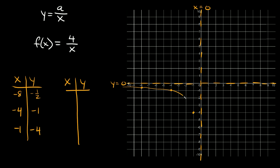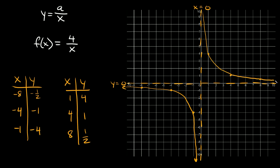So let's plot our three points: negative 8, negative one half; negative 4, negative 1; and negative 1, negative 4. We draw our line through those — there's our first branch. To draw the other branch, we use points on the right side of the vertical asymptote: 1, 4, and 8. Plugging in 1 gives 4 over 1 = 4; plugging in 4 gives 4 over 4 = 1; and plugging in 8 gives 4 over 8 = one half. We plot 1,4; 4,1; and 8, one half, then connect the dots for the second branch.